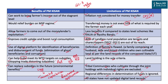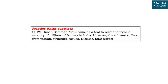After this detailed analysis of PM Kisan Yojana, you will be able to answer any related question in the mains examination. Here is a practice question: 'PM Kisan Samman Nidhi came as a tool to relieve the income security of millions of farmers in India. However, the scheme suffers from various structural issues.' Identify these structural issues and comment on how it has provided relief to millions of farmers. Try to answer in 250 words. Let us now move to the next article.